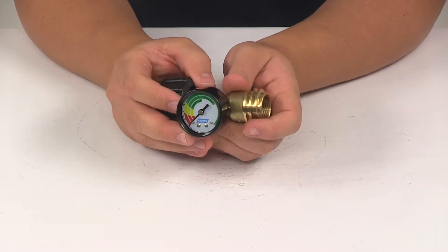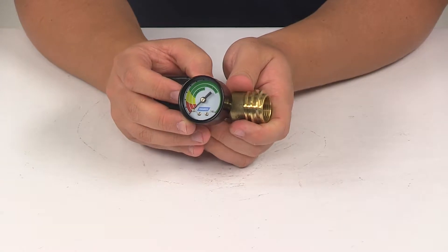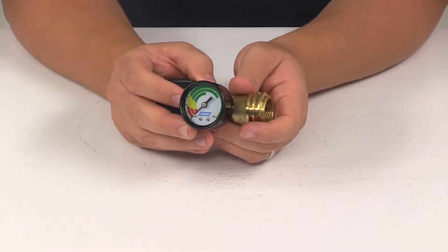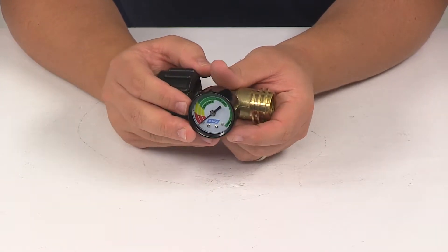Today we're going to be taking a look at the Camco propane cylinder gas gauge and leak detector. This gas gauge shows you when your propane cylinder is low and it's going to indicate when you have leaks.